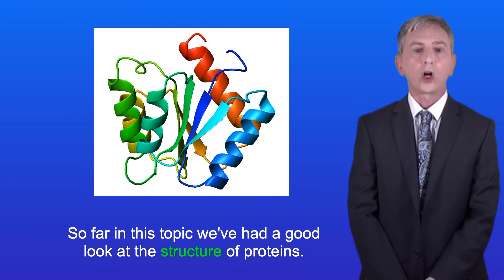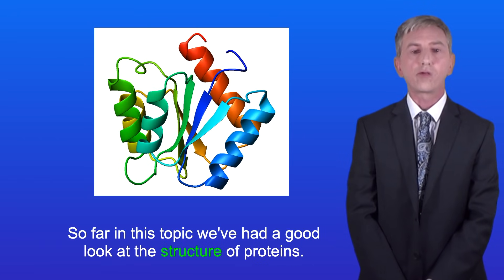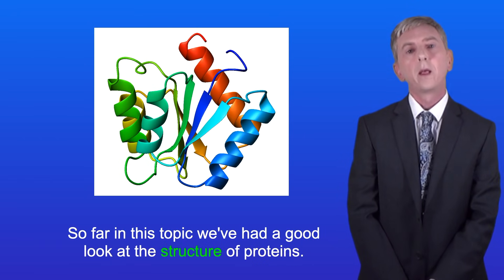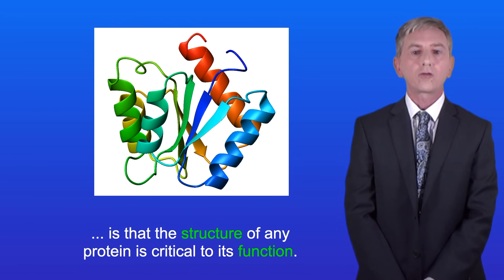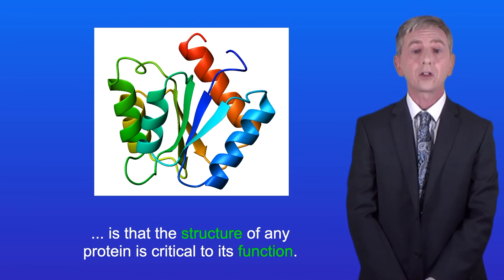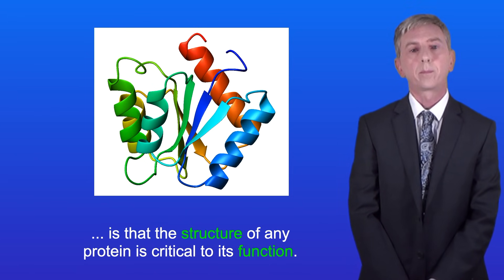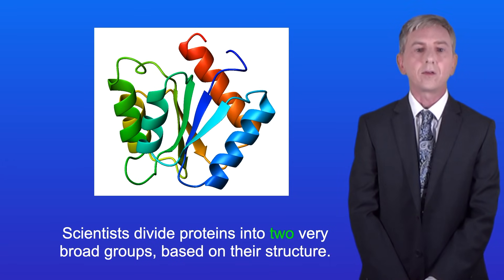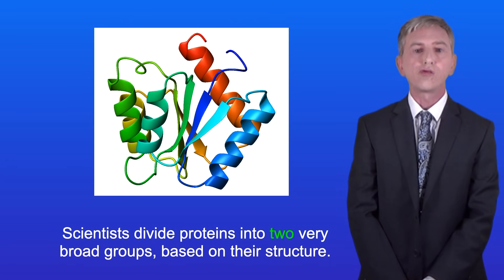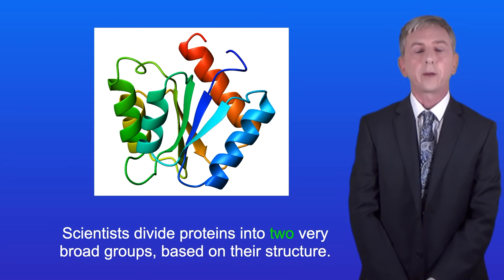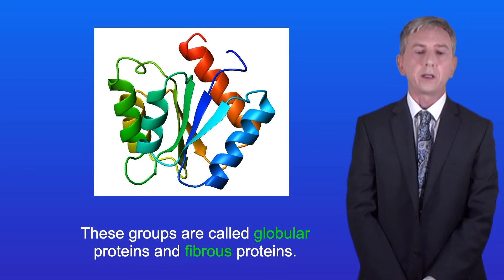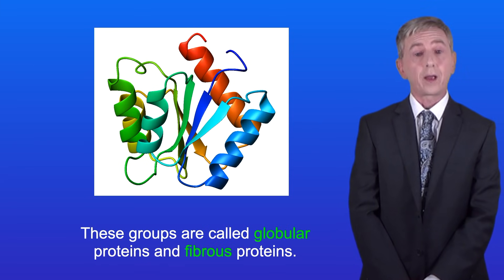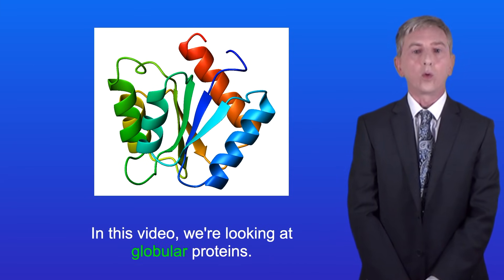So far in this topic we've had a good look at the structure of proteins. Now one key idea you need to understand is that the structure of any protein is critical to its function. Scientists divide proteins into two very broad groups based on their structure: globular proteins and fibrous proteins. In this video we're looking at globular proteins.